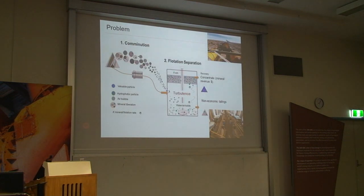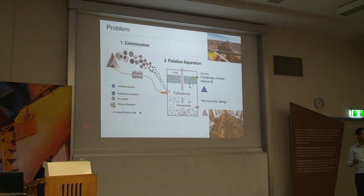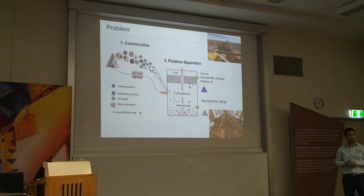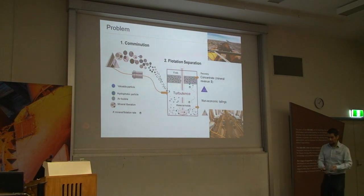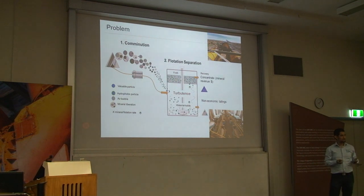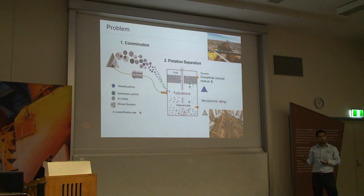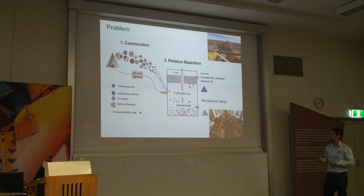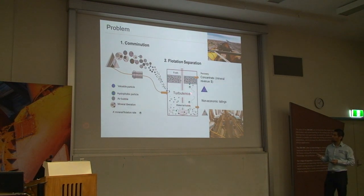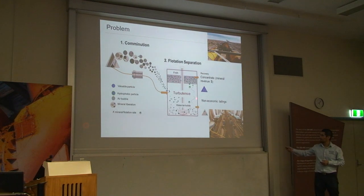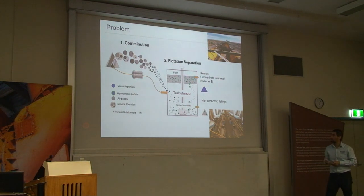In mineral separation we have two main areas: comminution and flotation. Comminution reduces rock to a liberated state to make it easy for flotation to recover the mineral of interest. In flotation, we have a flotation tank with an impeller, and we put everything there — the slurry, air, and water — to generate turbulence, generate macro and micro-processes, and separate the metal from the gangue. What happens inside this process is really poorly understood, which is the main problem.